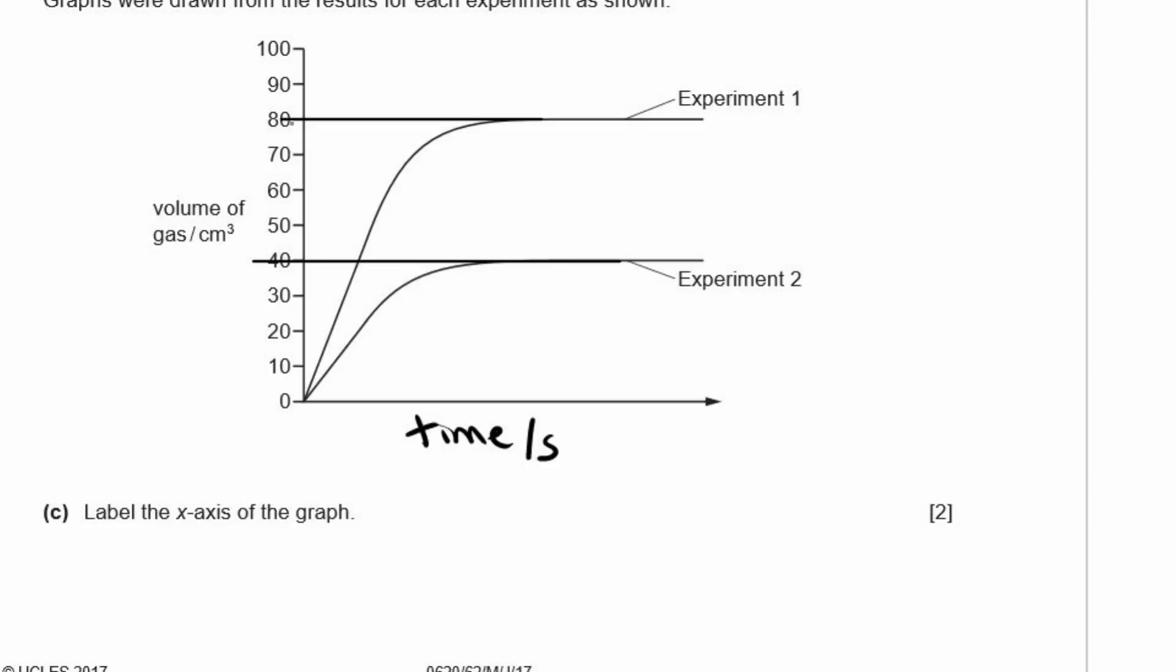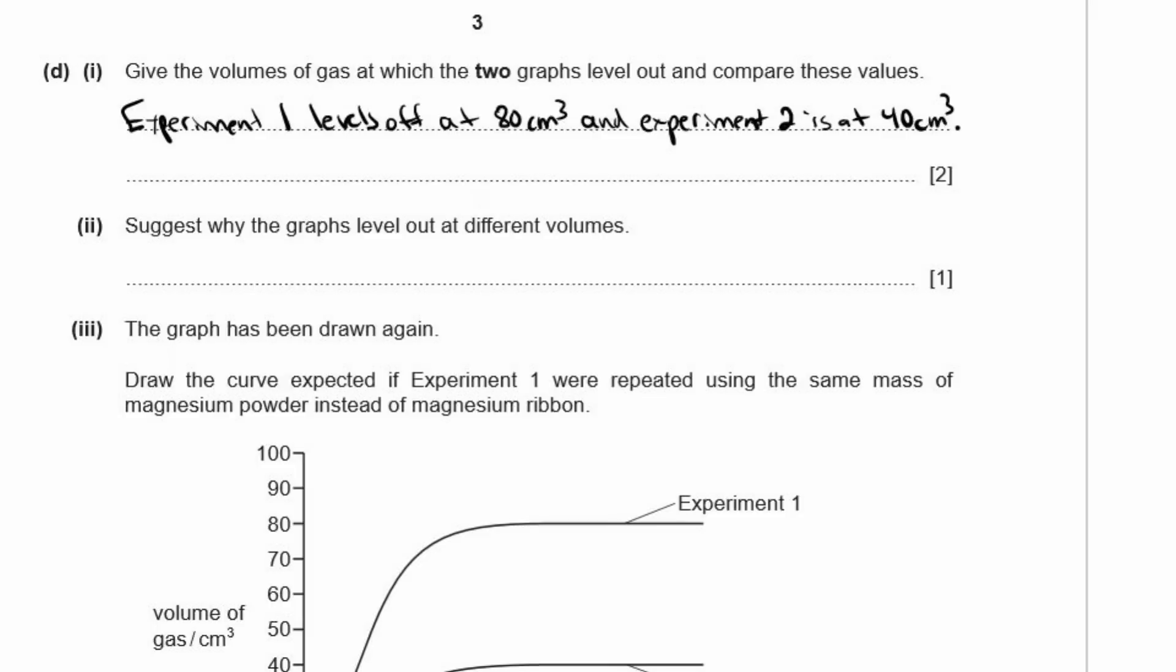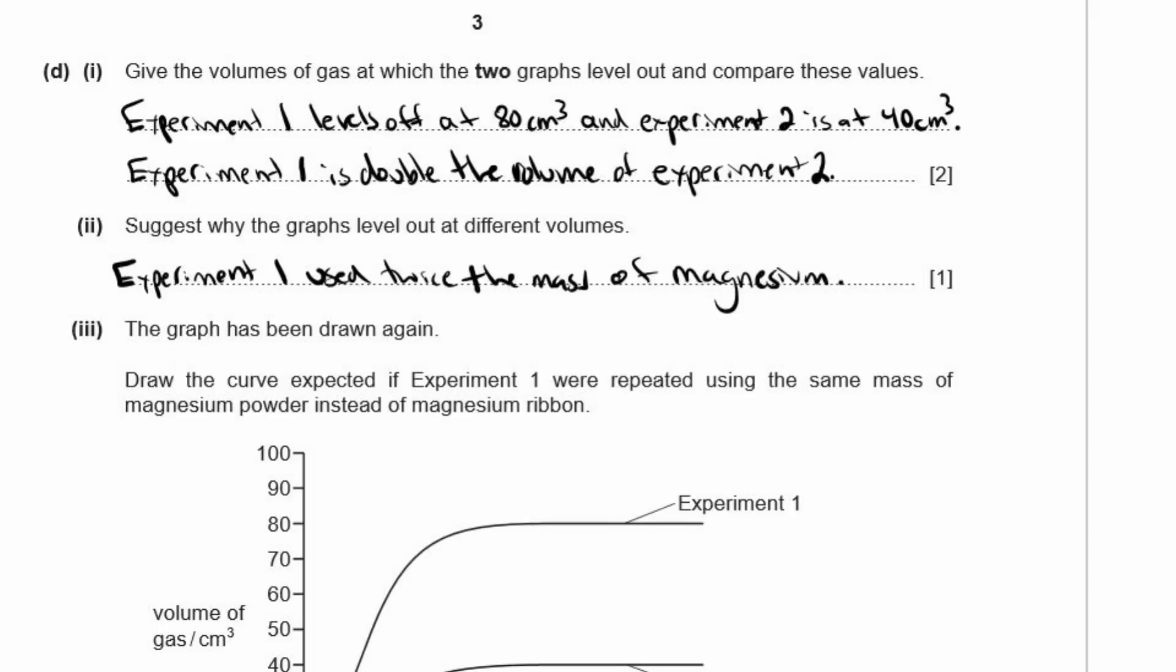Well, clearly 80 is double 40, and so that is all you need to do to compare them. So experiment one levels off at 80 centimeters cubed, and experiment two is at 40 centimeters cubed. So experiment one is double the volume of experiment two. Okay. Two, suggest why the graphs level out at different volumes. Well, that would be to do with the mass of the magnesium used. If they use the same amount of acid, they would have to use different masses of magnesium to get them to level out at different volumes. So you can say experiment one used twice the mass of magnesium.